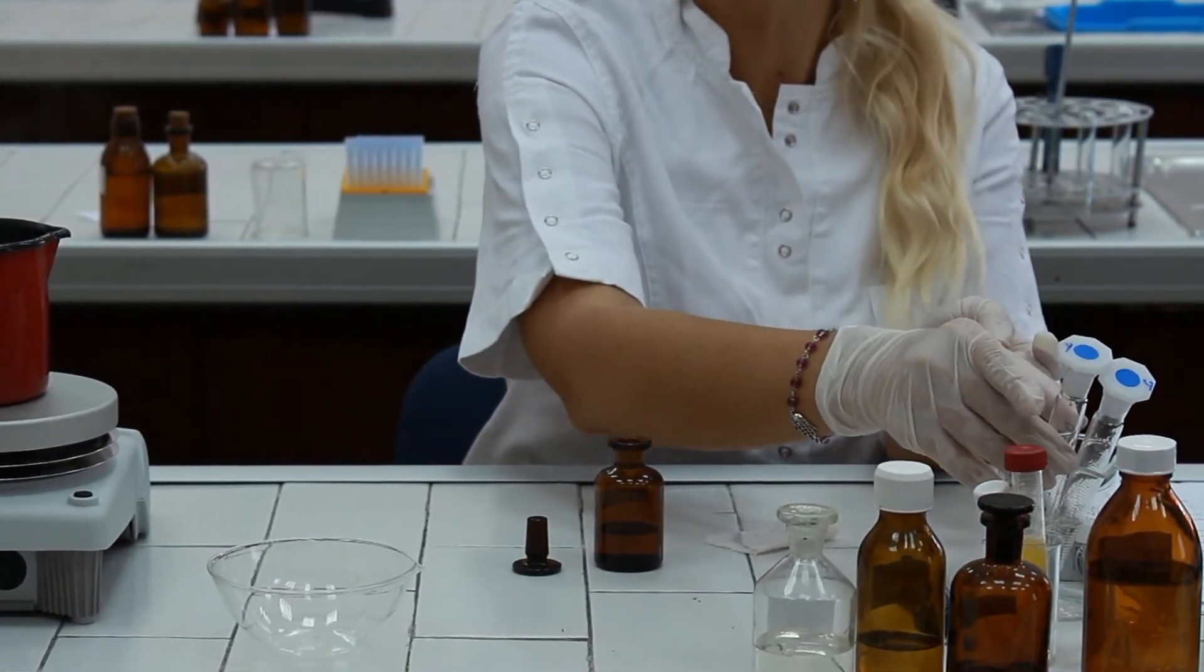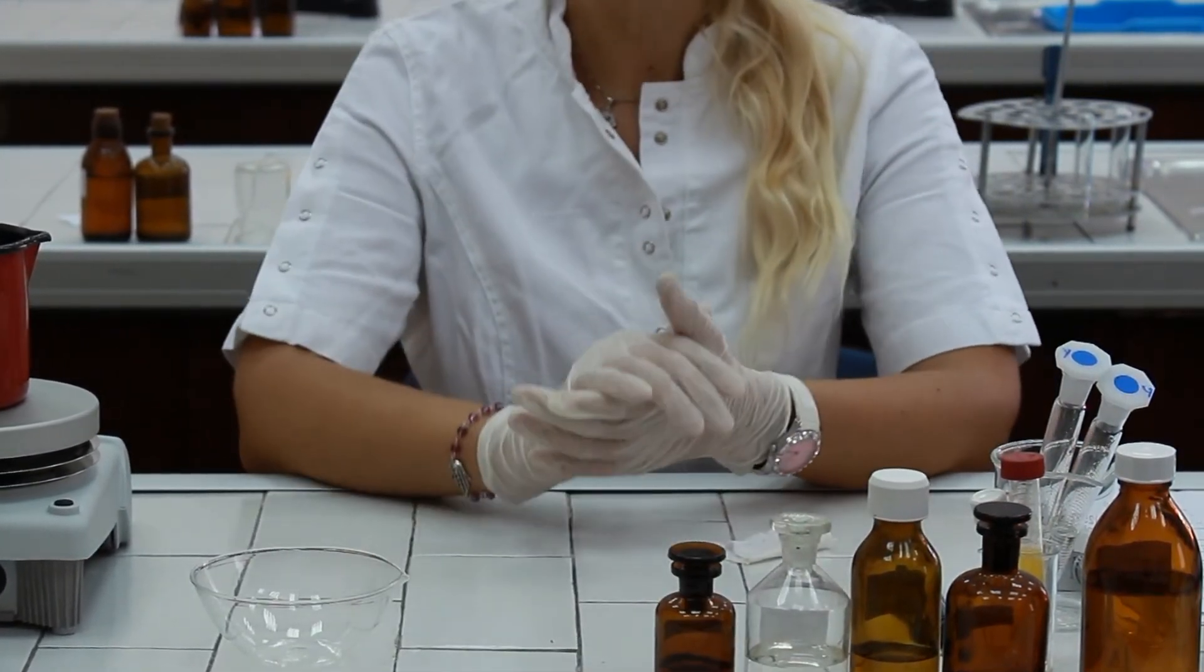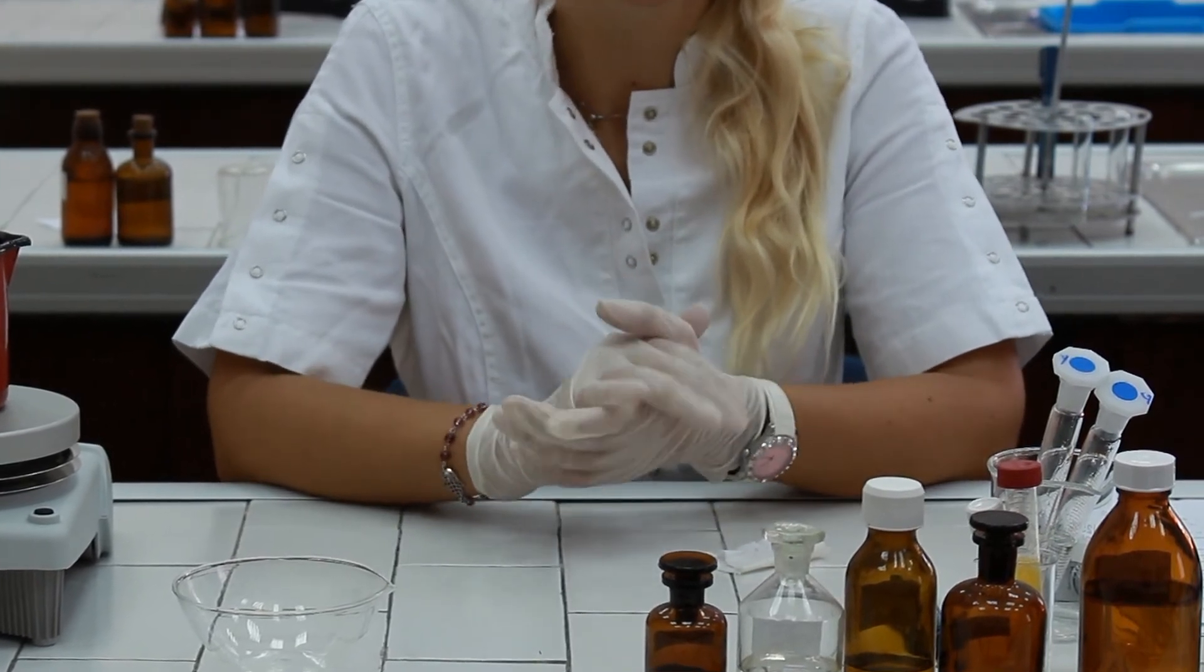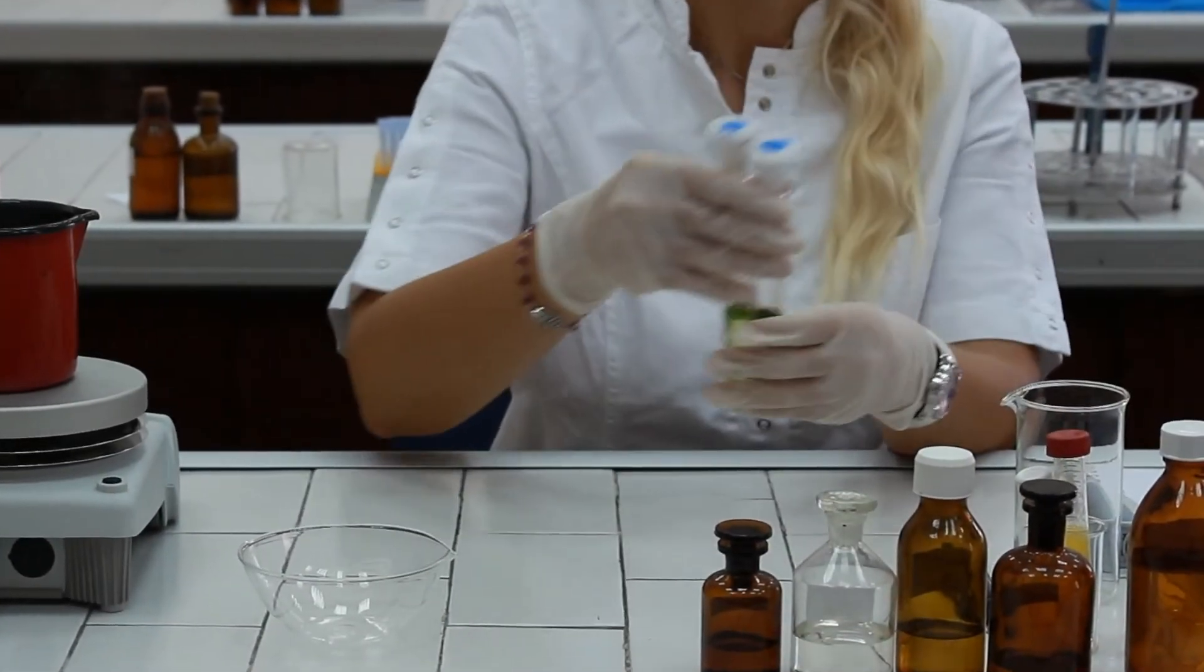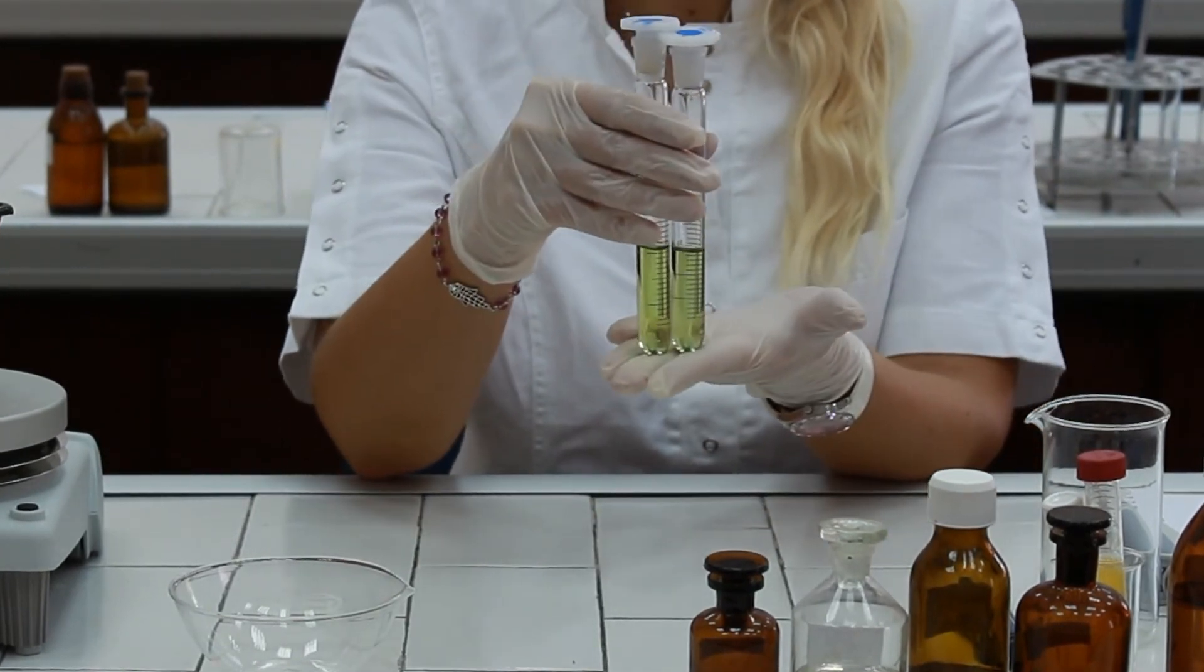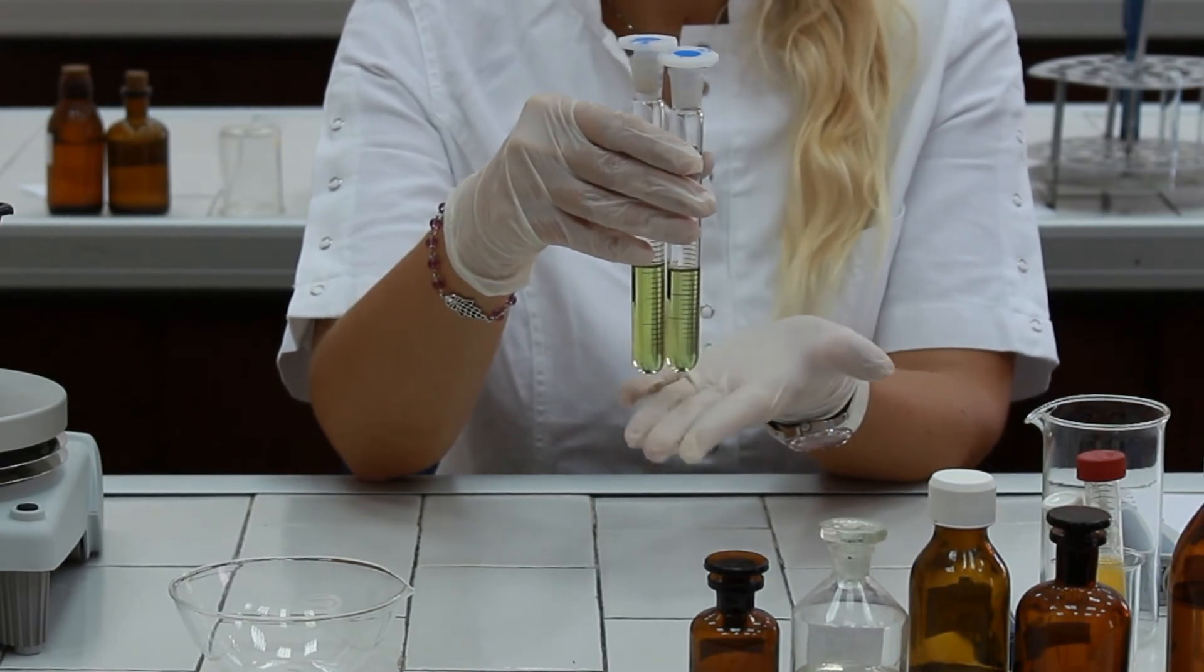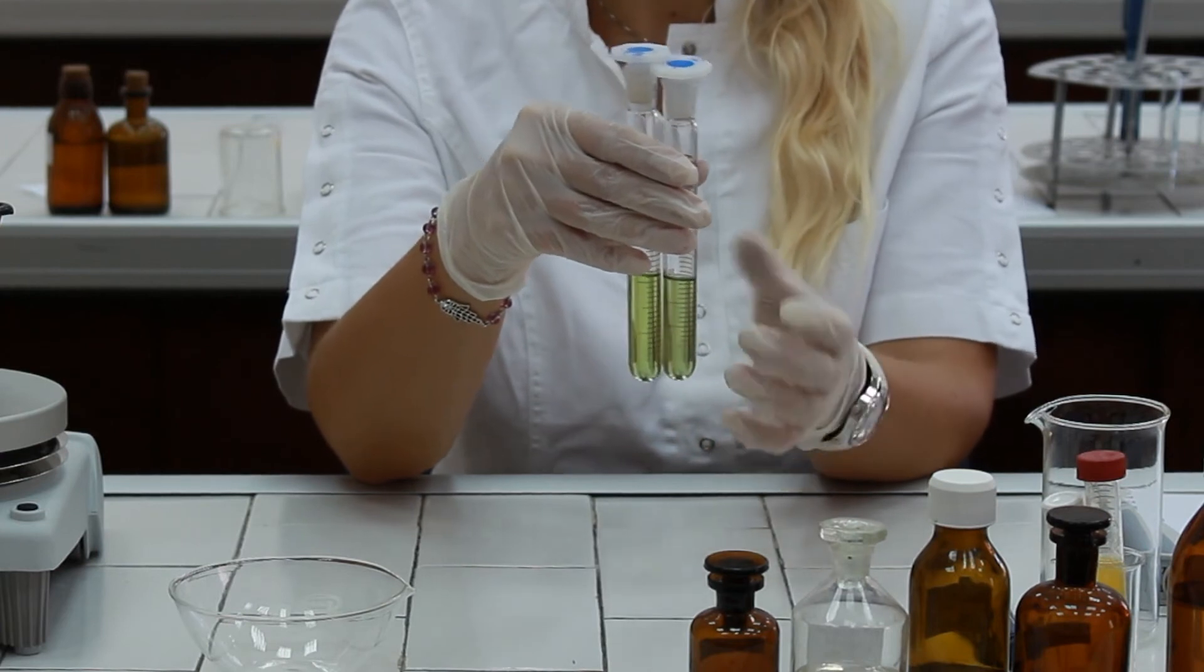In order for the green color to develop, we need to place graduated cylinders in darkness for at least 15 minutes to half an hour. After 15 minutes to half an hour, we get the developed green color as a product of this reaction. Now we can read the absorbances by using the red filter.